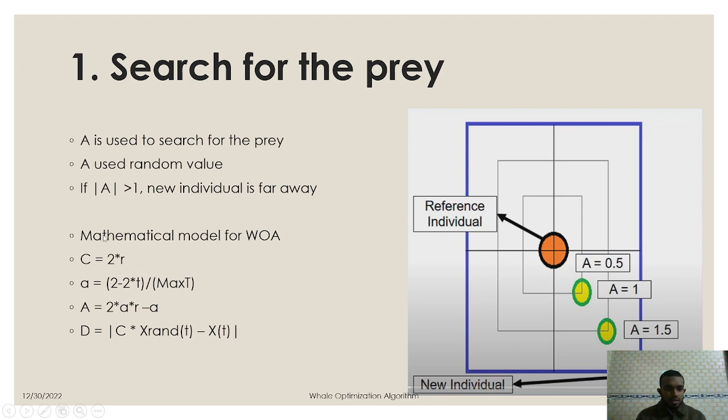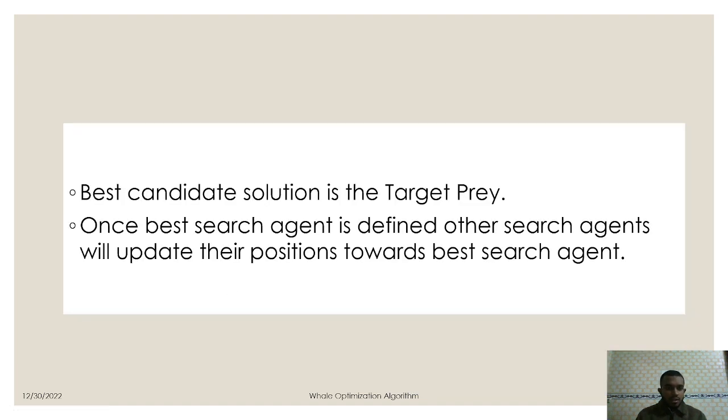So we have other mathematical model for whale optimization algorithm where r is the random variable, t is the iteration, and max t is the maximum number of iteration. And here we calculate d for distance vector and here the best candidate solution is the target prey. Once the best search agent is defined, other search agents will update their position towards the best search agent. That means when best search agent is found others will adjust their own position according to the best search agent.